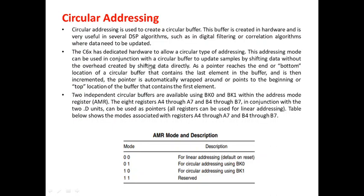This addressing mode can be used in conjunction with a circular buffer. As a pointer reaches the end or bottom location of the circular buffer containing the last element, in circular buffering the pointer which points to that primary location is where data is written. Two independent circular buffers are available using BK0 and BK1 within the address mode register AMR.